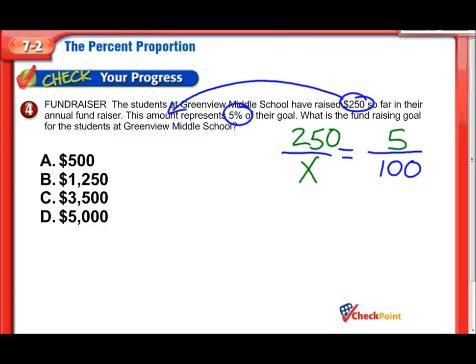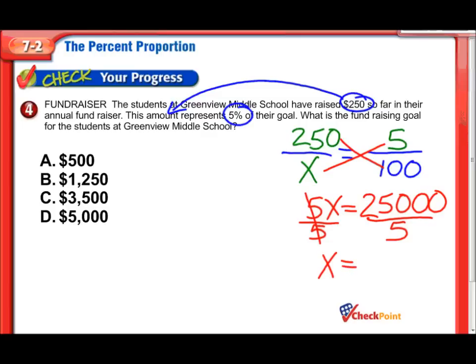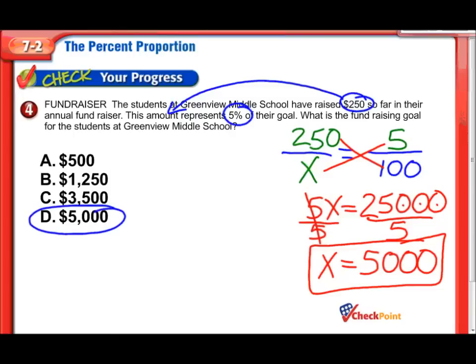Now some cross products. And we'll figure this out. Well, 5 times x is 5x. 250 times 100. 25,000. Divide by 5. Divide by 5. That cancels out. That cancels out. It equals 1. And 1 times x is x. And now let's see here. Well, 25 divided by 5 is 5. Plus I have 1, 2, 3 zeros. There we go. So it looks like it's $5,000 that they want to raise. Is that an answer choice? Yes, it is. There we go. D. So the students at Greenville Middle School have raised $250. This amount represents 5%. What is their fundraising goal? Well, that's $5,000. They want to raise $5,000. And they have 250 so far.